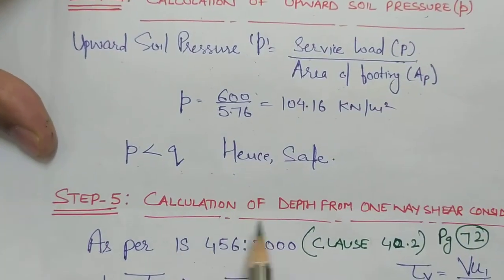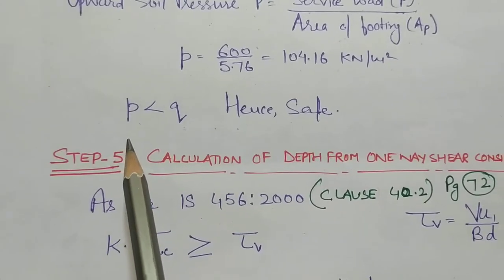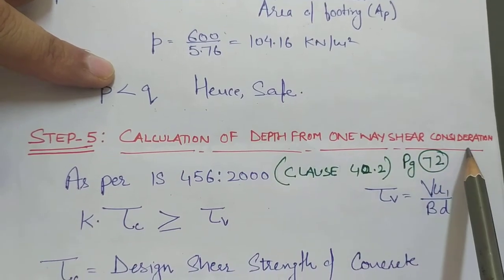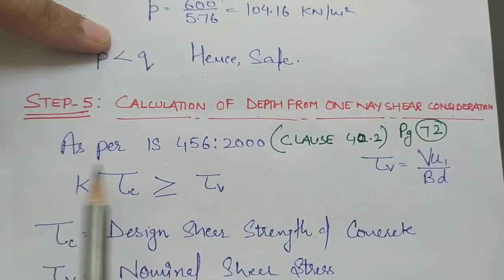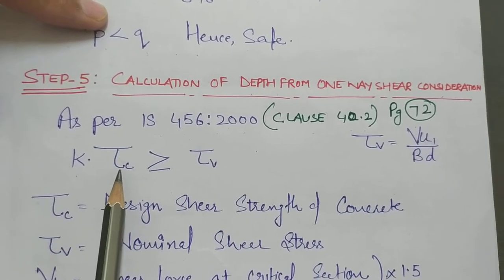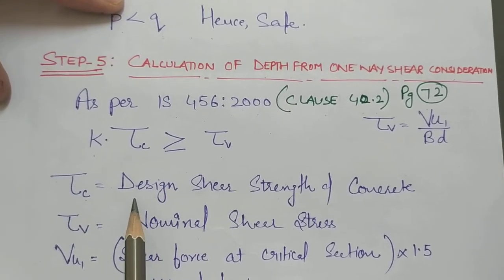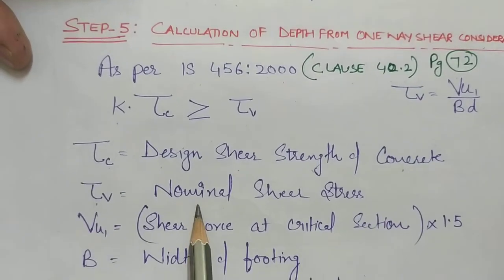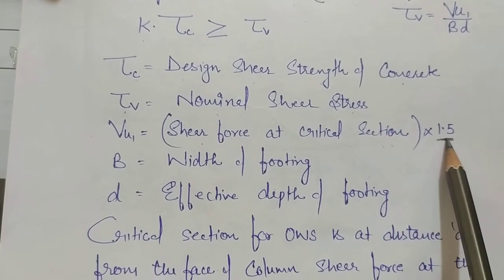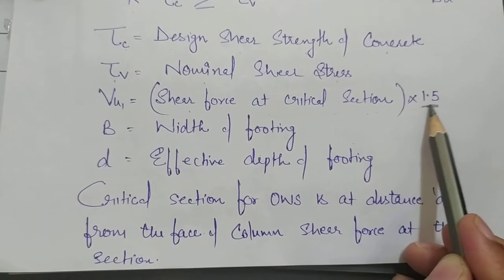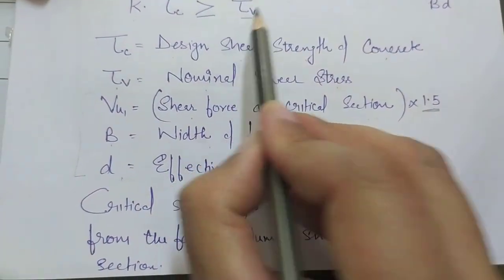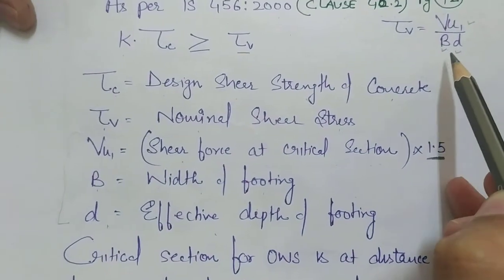Step five is the calculation of depth from one-way shear consideration. As per IS 456-2000 clause 40.2, page 72, the condition is K × τC ≥ τV. Here τC is the design shear strength of concrete, τV is the nominal shear stress equal to VU1 / (B × D). VU1 is the factored shear force at the critical section, multiplied by 1.5 for limit state method. B is the width and D is the effective depth of the footing.